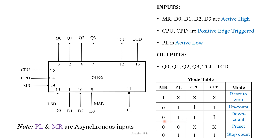If master reset is 0 and parallel load is 1, with the up count clock connected to VCC and the down count clock connected to the clock input, then sequential down count happens. If master reset is 0 and parallel load is 0, both clocks become don't care and preset occurs — whatever data is present on D0 to D3 travels to the output asynchronously. If master reset is 0, parallel load is 1, and both clocks are connected to VCC, no counting operation is performed.